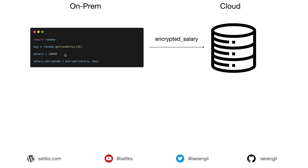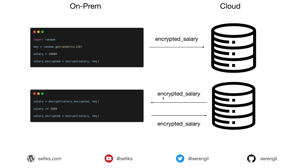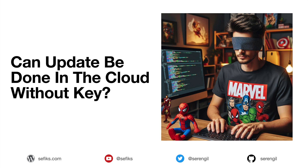But what if I need to update this salary information on the cloud site? I should retrieve it from the cloud environment first — it's going to be an encrypted salary. Secondly, I need to decrypt it. Once it's decrypted I will have the plain value. Thereafter I'm going to update that plain value, encrypt it again, and finally send it back to the cloud. But in that case, cloud is pretending like a dummy client — I'm using all computation power on-prem and almost none from the cloud.